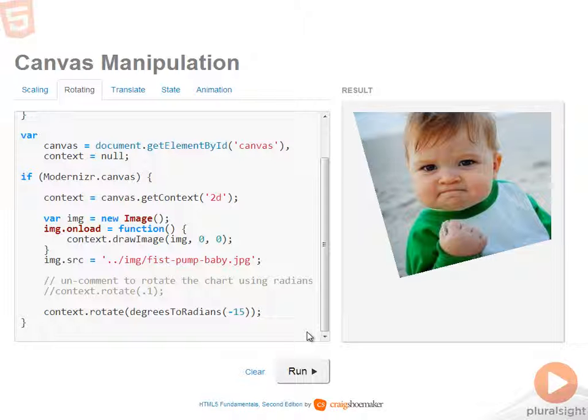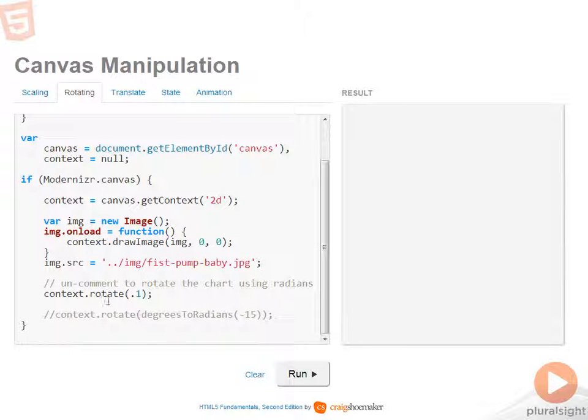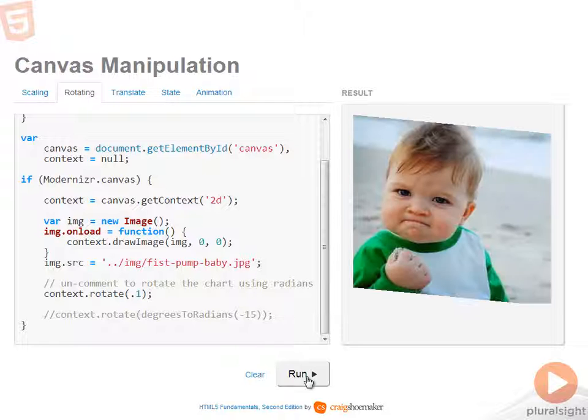If you want to deal with raw radians, you can do that as well. So I'll uncomment this line and switch things around a little bit so you can see what rotating at 0.1 radians looks like. I'll refresh the page. And so now the rotation is using 0.1 radians. And so there we get a different rotation on the canvas.